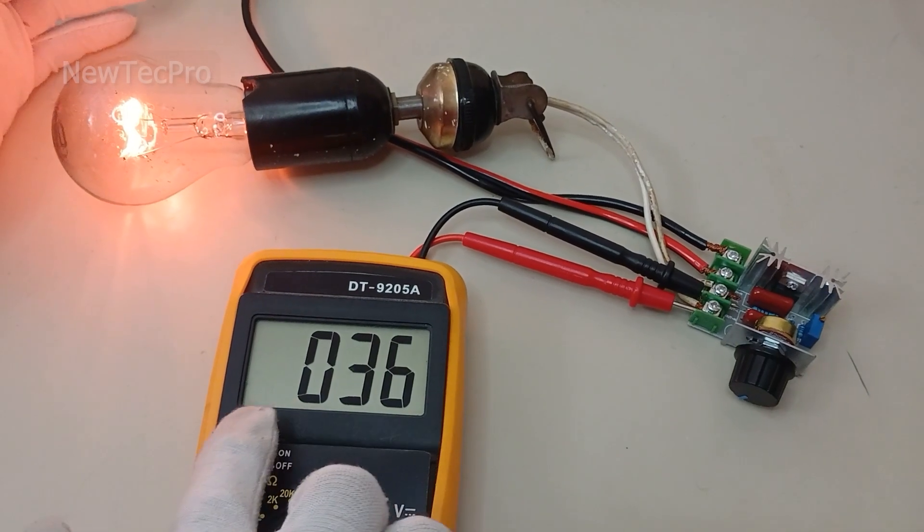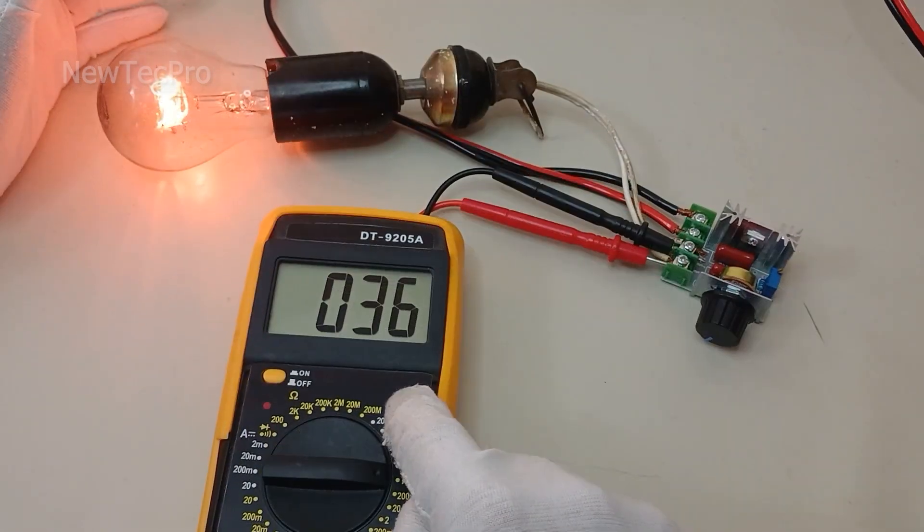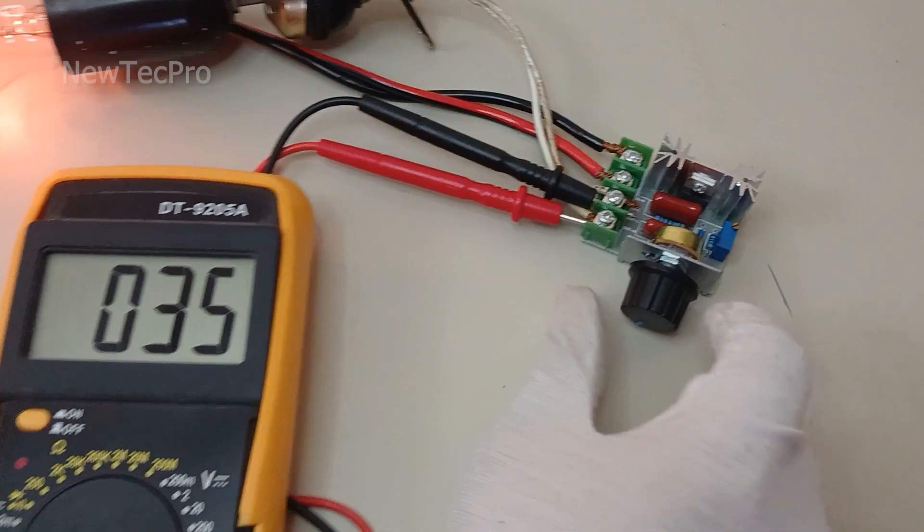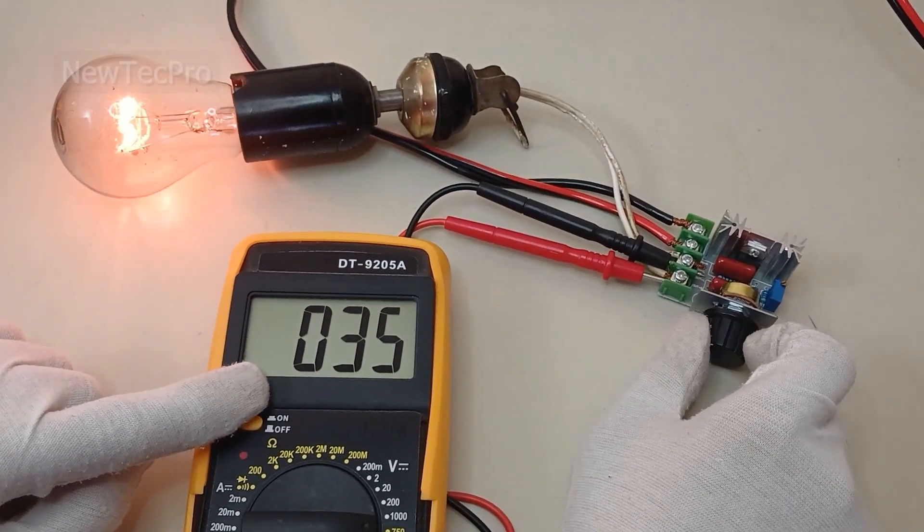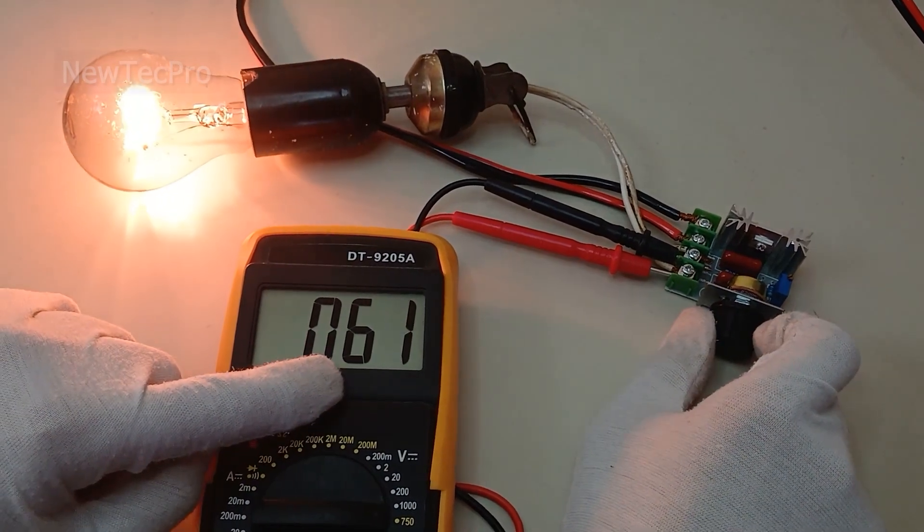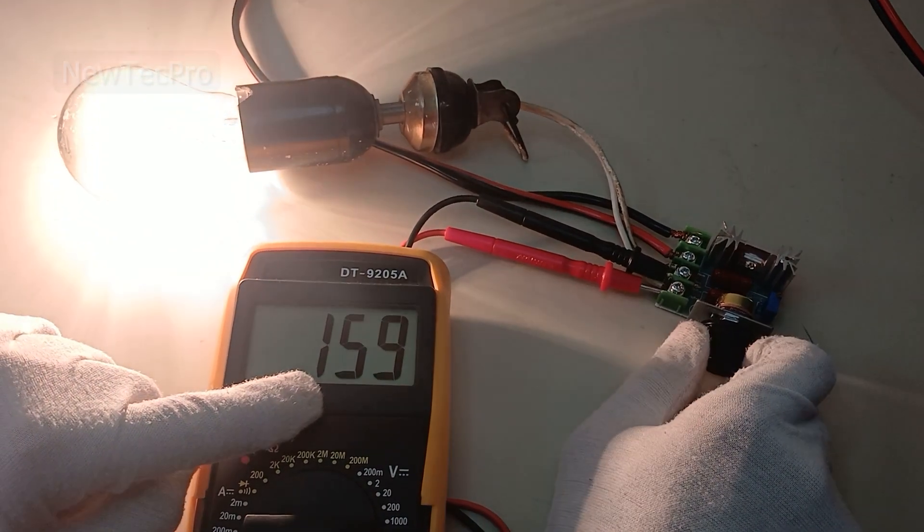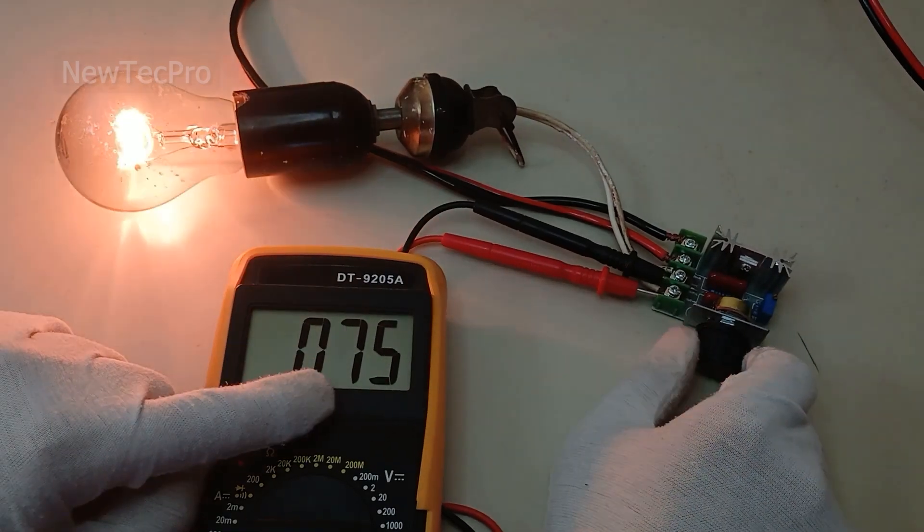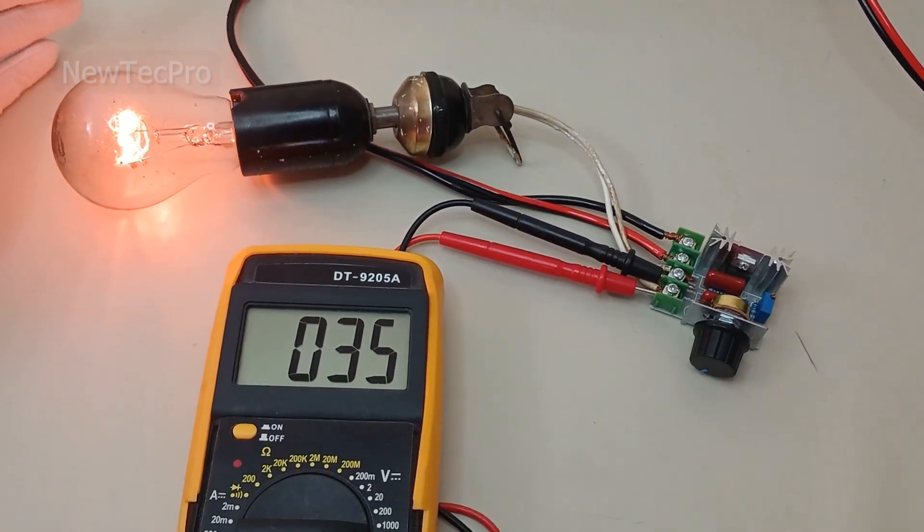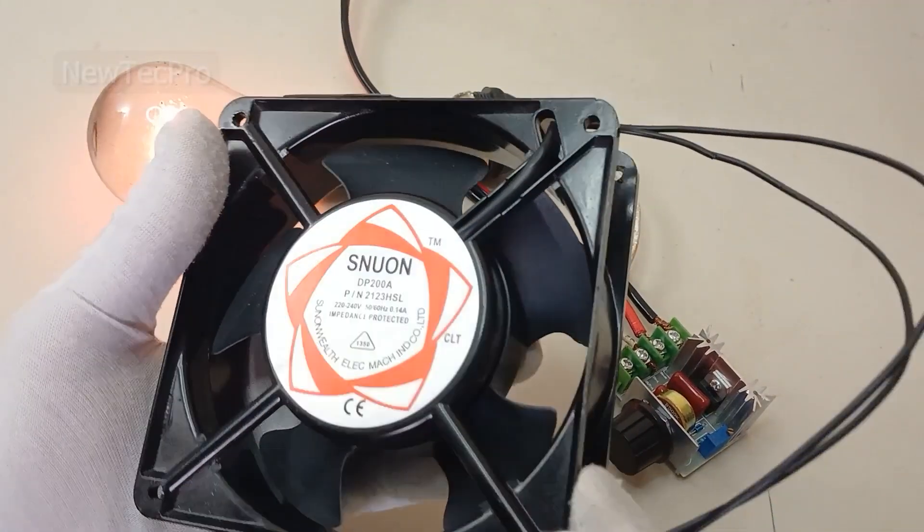For measuring voltage, I connect the probe of the multimeter here and measure the voltage. As you can see here, you can measure AC voltage with a multimeter.